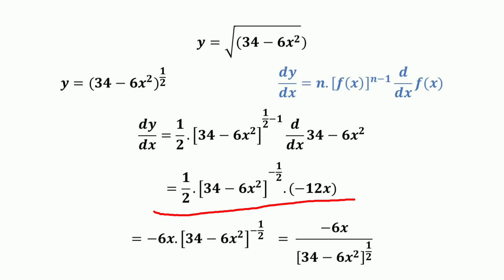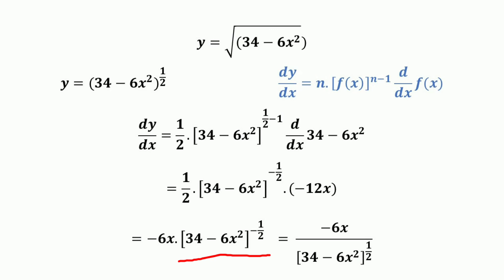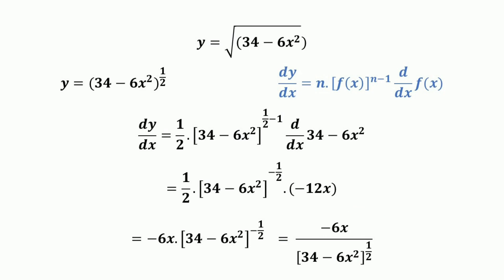Multiplying (1/2) by minus 12x gives minus 6x, so the result is minus 6x times (34 minus 6x²) raised to the power minus 1/2, which we can rewrite as minus 6x divided by (34 minus 6x²)^(1/2). This is the derivative of the given radical function y equals √(34 minus 6x²).